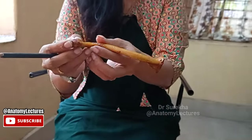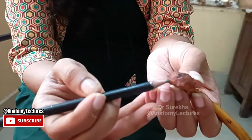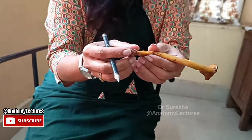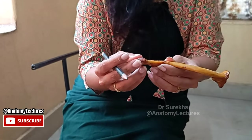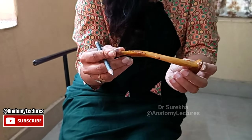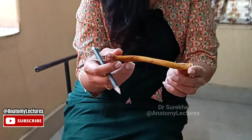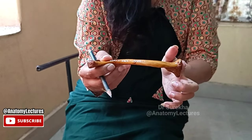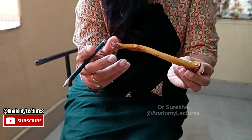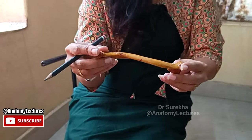The lateral end of the clavicle bears one oval articular facet. This articulates with the articular facet on the medial surface of the acromion process of the scapula to form the acromioclavicular joint. So on the medial side it articulates with the sternum to form the sternoclavicular joint, and on the lateral side it articulates with the acromion process to form the acromioclavicular joint.